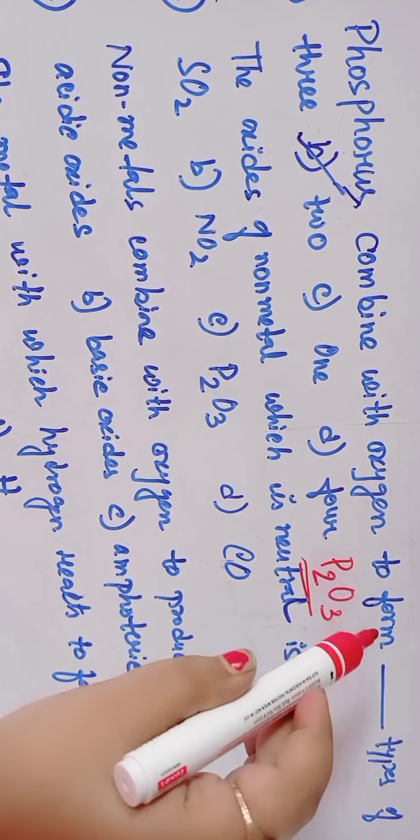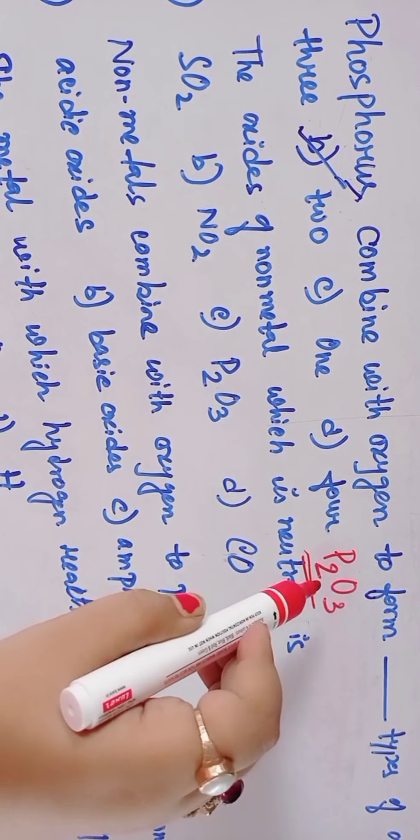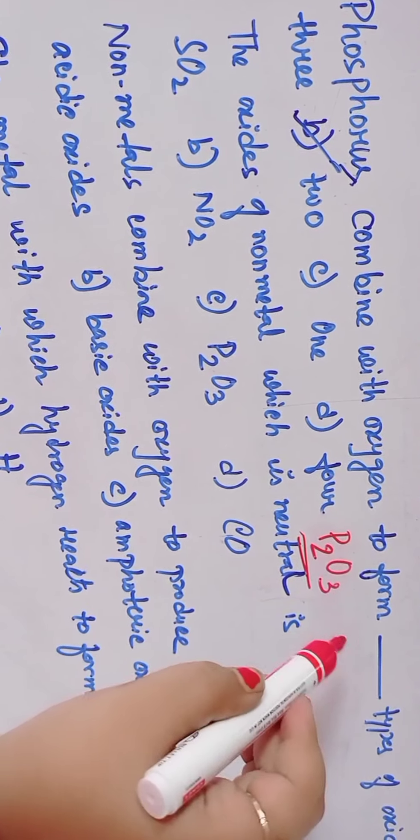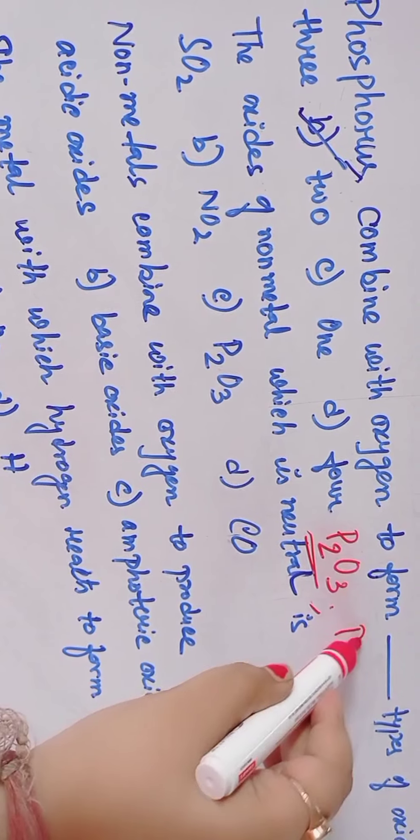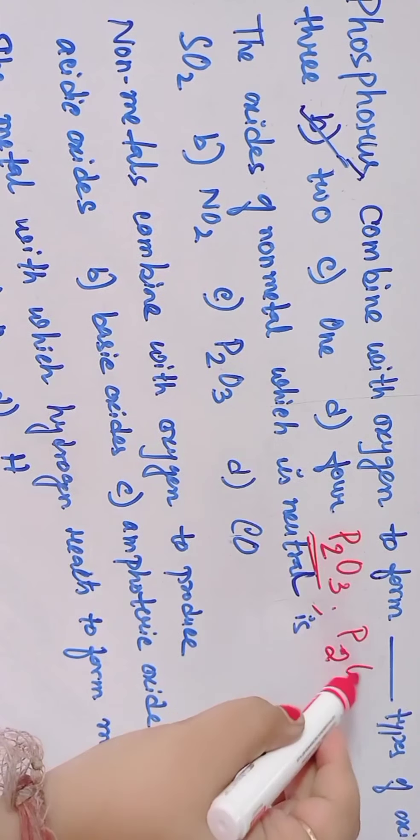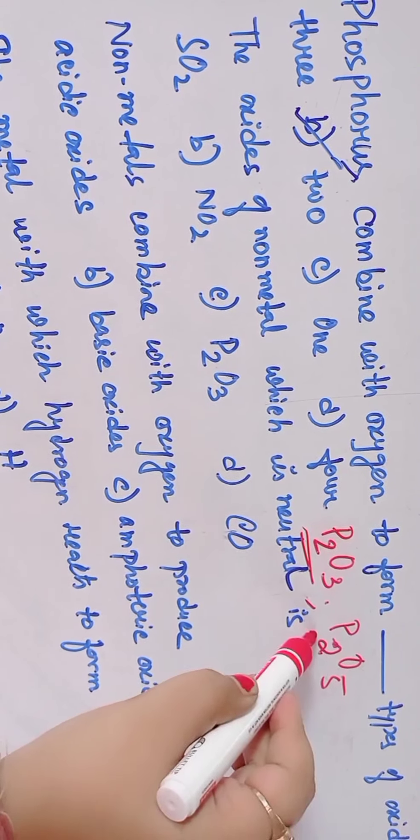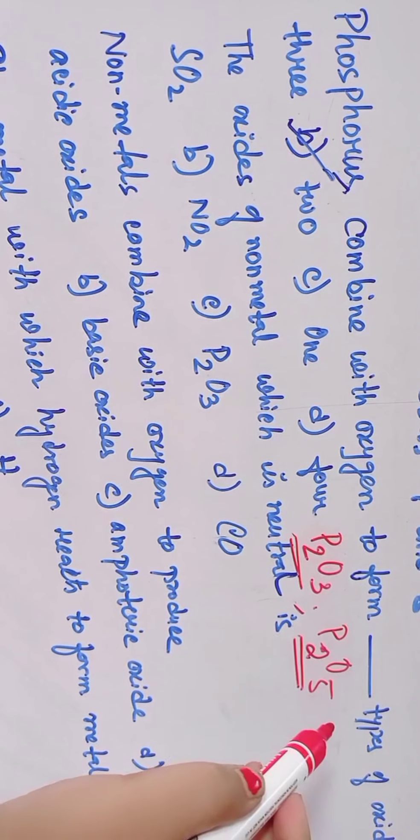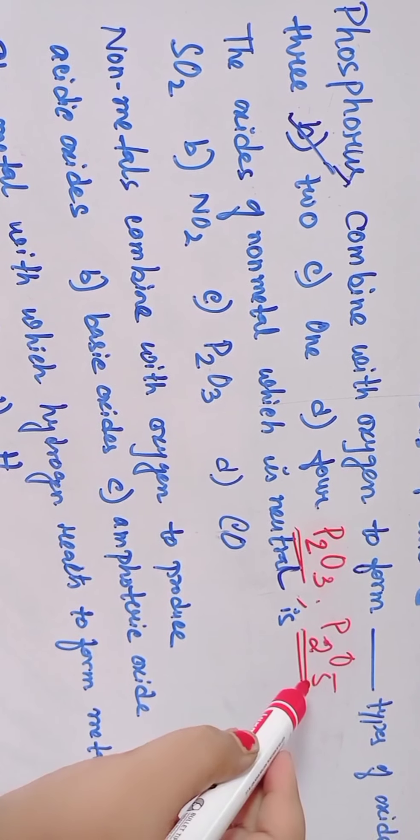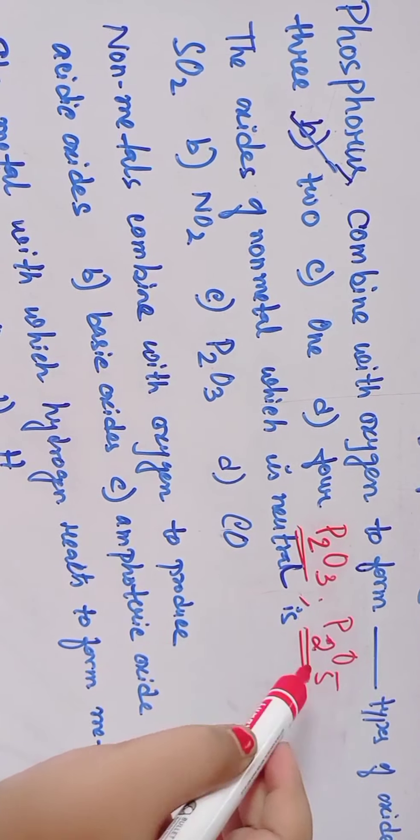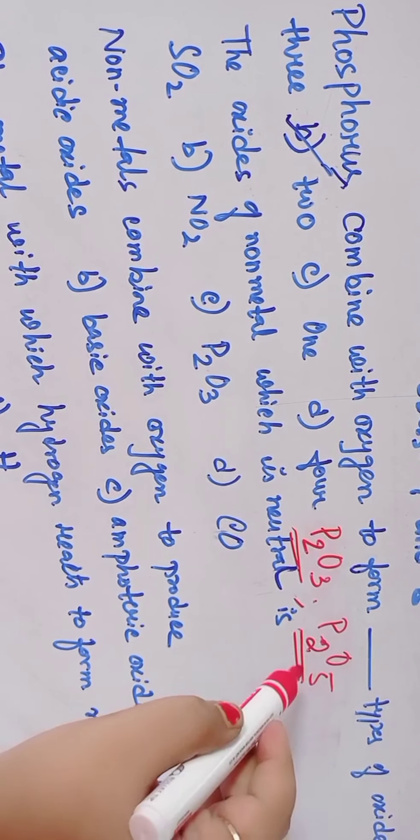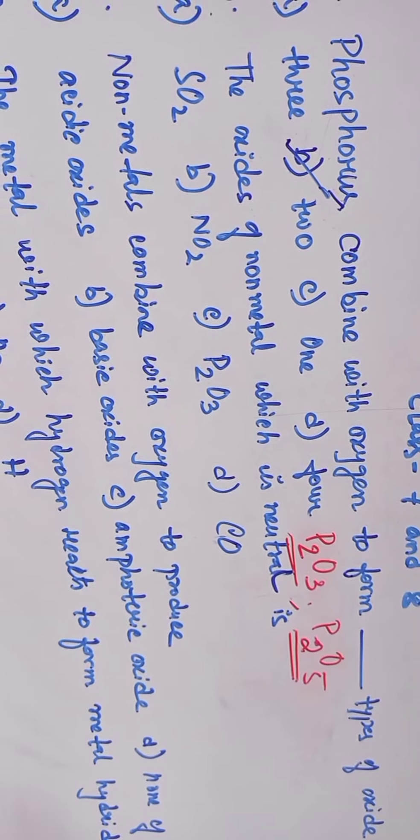P2O5, phosphorus pentoxide. So phosphorus trioxide and phosphorus pentoxide, these are the two types.